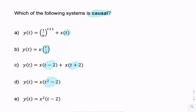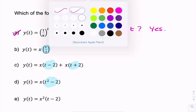The only question we need to ask is whether this value is less than or equal to that value for all values of t. So we simply ask: is t always less than or equal to t? The answer is yes — it's always equal. So therefore, a is causal.